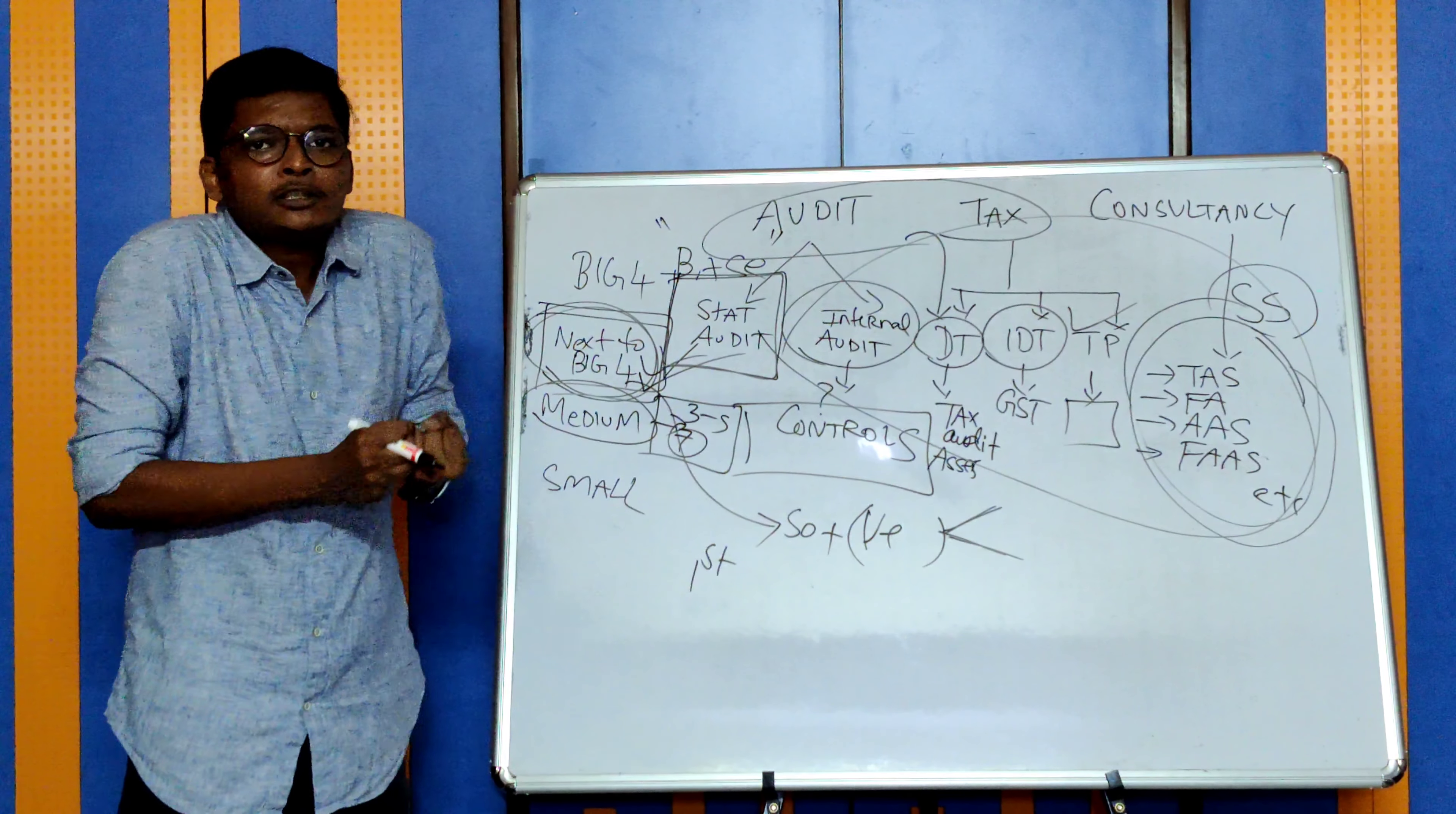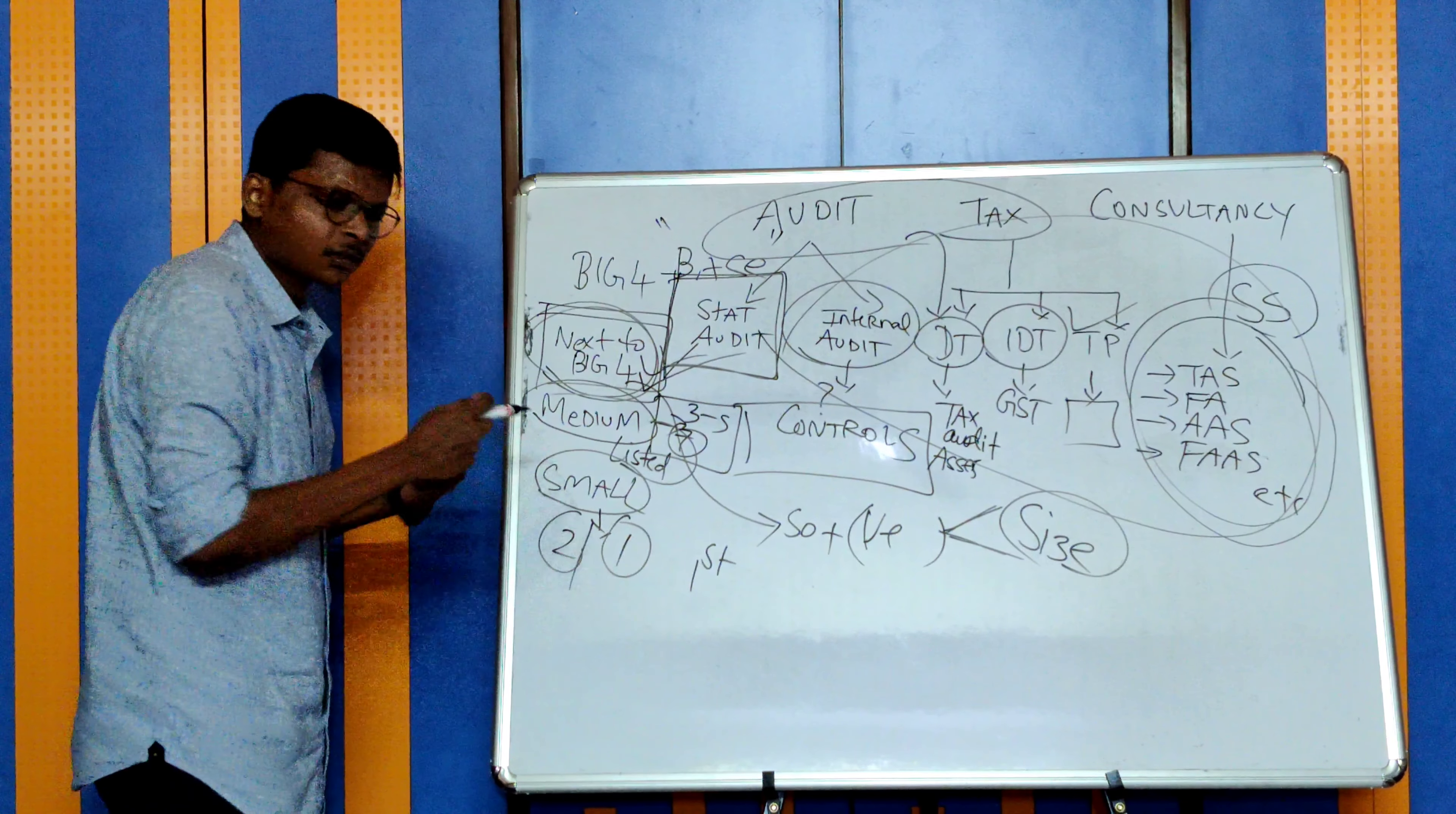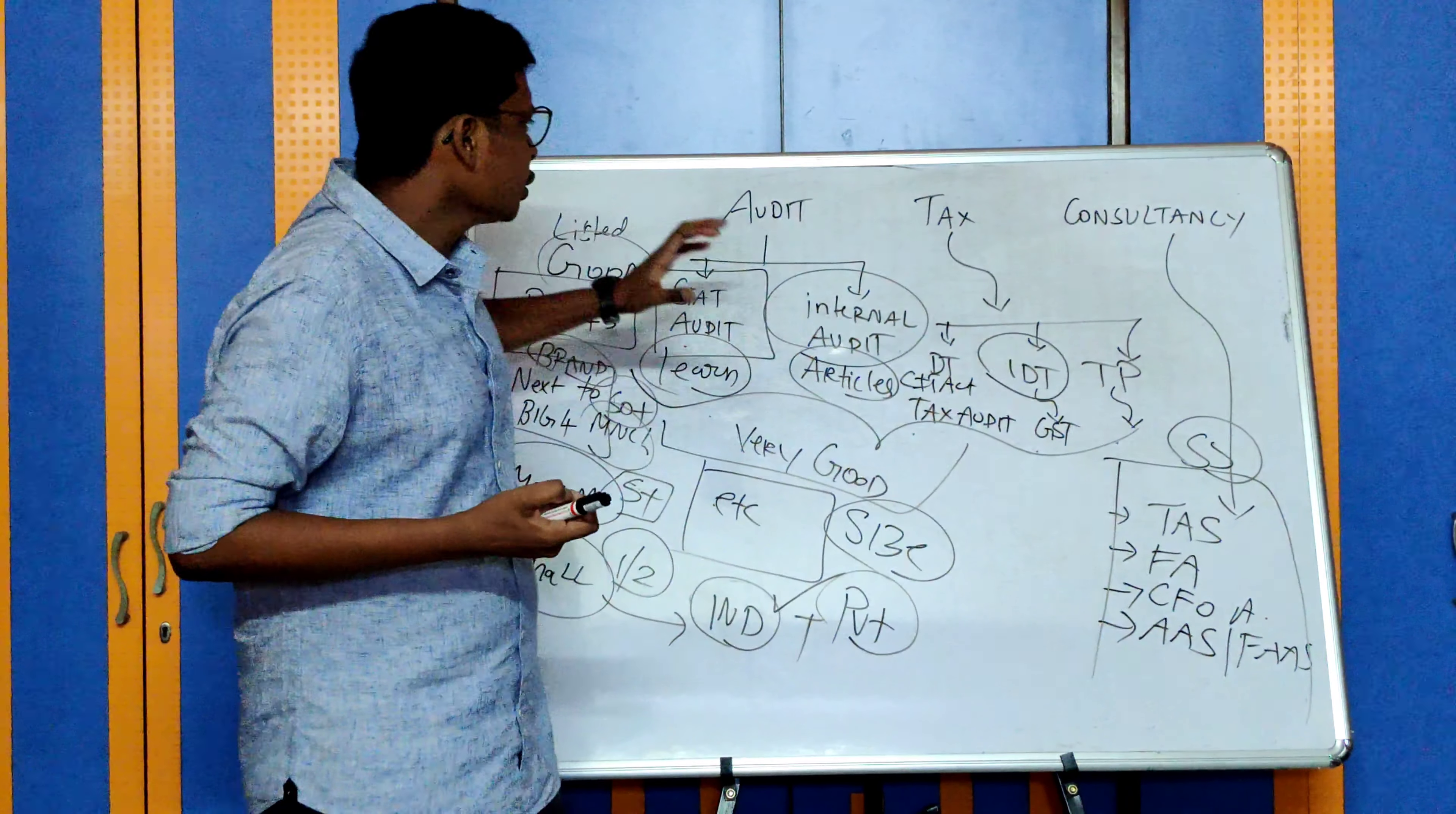But the size of the engagement will be small. Very rare to find a listed company audit here. You will find a lot of listed audits in Big Four or next to Big Four firms. So you will do the same work, but the size of your work, the size of the company, will be much smaller. Coming to small firms - two partners, one sole proprietor, very small firms. Here what you will learn mainly is tax related work where you will do individual filings. You will be good in direct tax and indirect tax, GST filings, and a little bit of statutory audit for small companies.